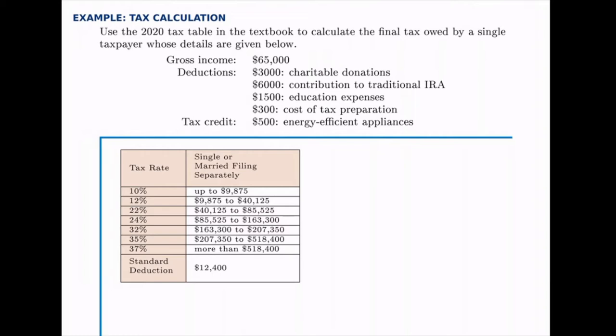So we're looking at the column in the tax table that has single or married filing separately — in this case, it's a single person. We're given their gross income, which is the total amount of money they receive from all of their salary, tips, etc.